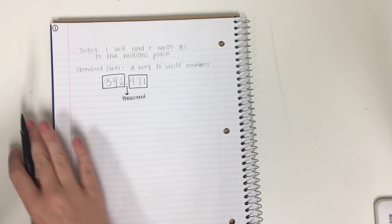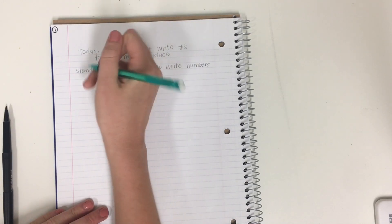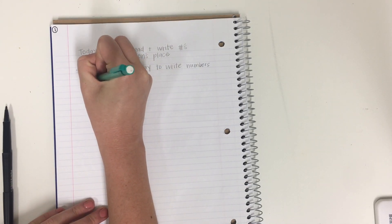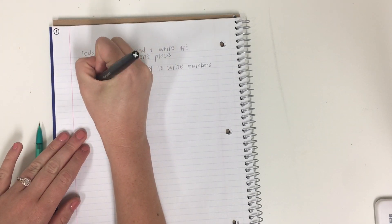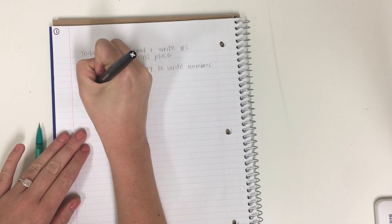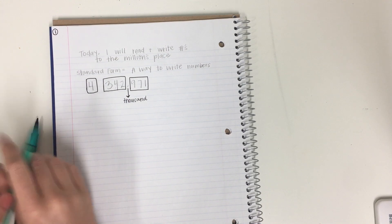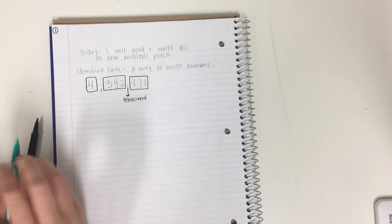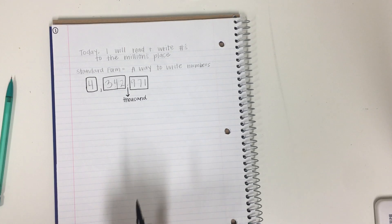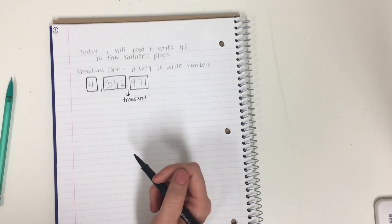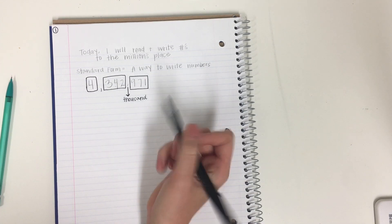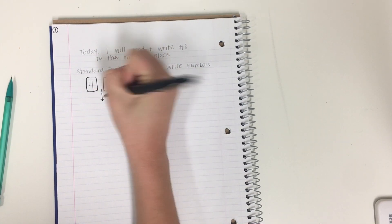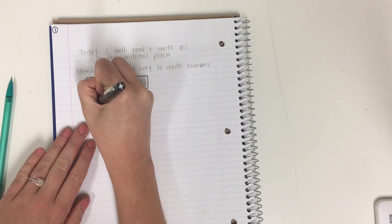So just knowing this comma means the thousands place will help you to read the number. Now I want us to add another number. Let's add a 4 here. And let's put a box. And we need a comma. So now we have another comma. Does anyone know what this comma stands for with place value? You're right. This stands for the millions place.